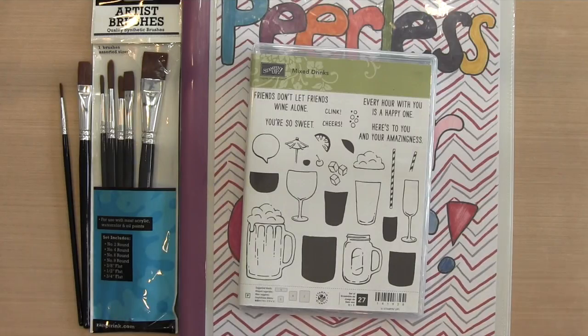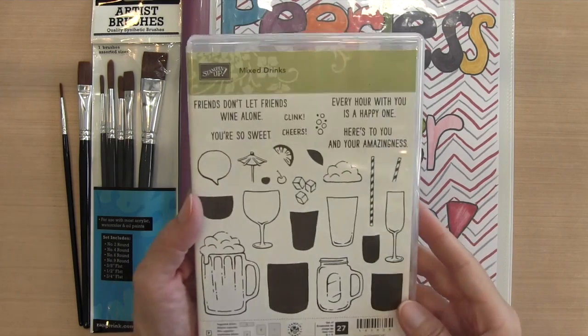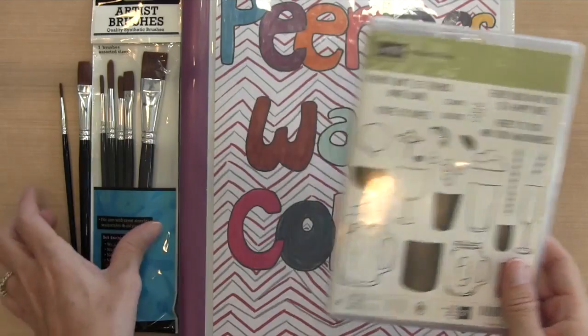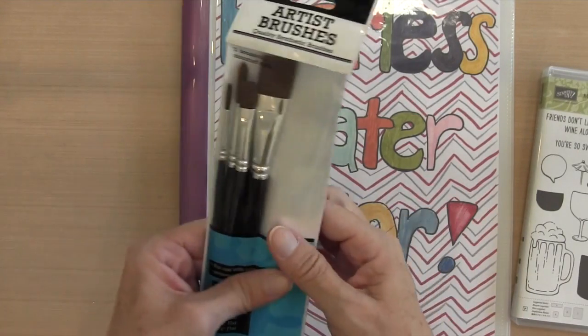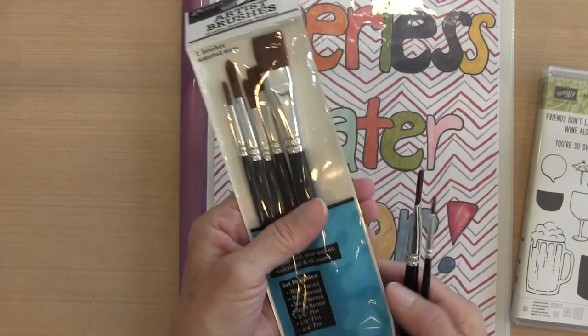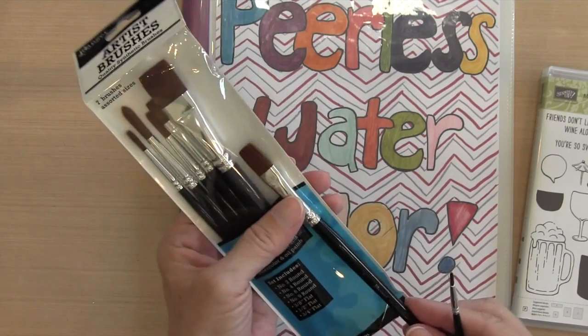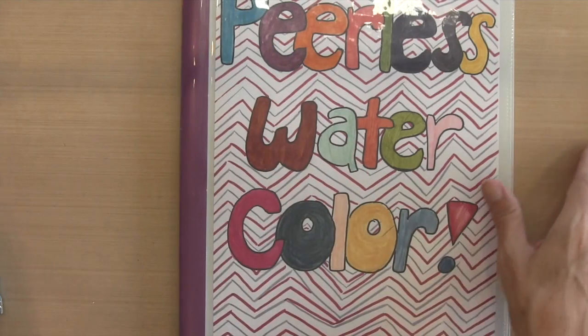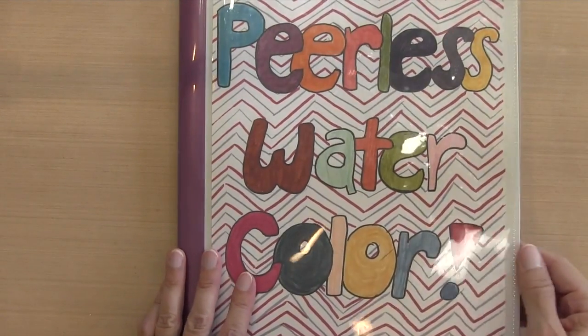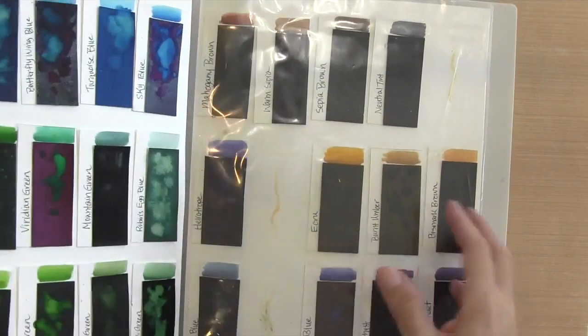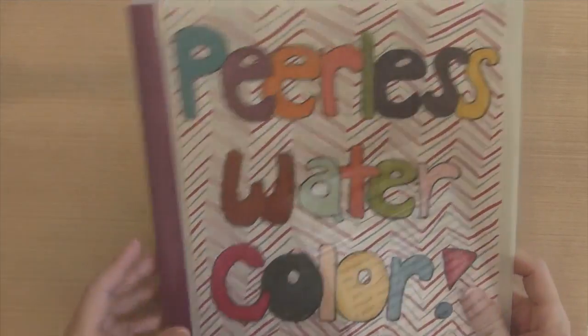In today's card, I'm doing some more watercoloring. I have my Mixed Drinks set by Stampin' Up. I'm just using this wine glass here. I'm also using a set of Artist Brushes by Ranger. There's several brushes in the set. I'm just using these two that I have here. One kind of a medium and then a smaller one to get into the smaller areas. And then I'm using my Peerless watercolors. My daughter created this cover for me. And then I have them all cut into samples so that I could see the colors that I have.